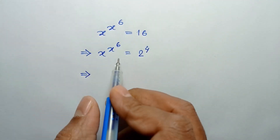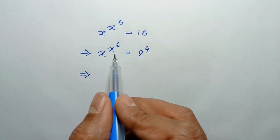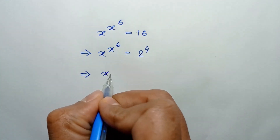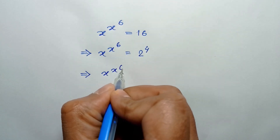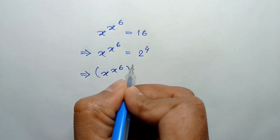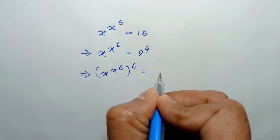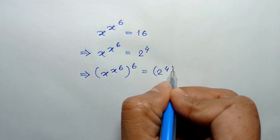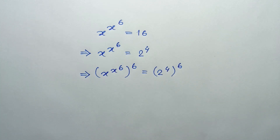Raising both sides to the power of 6, we will have x to the power x to the power 6, whole to the power 6, is equal to 2 to the power 4, whole to the power 6.